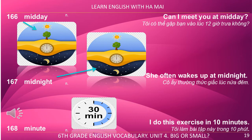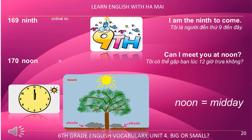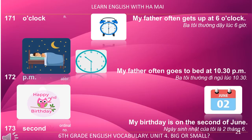I do this exercise in 10 minutes. Ninth. I am the ninth to come. Noon. Can I meet you at noon? O'clock. My father often gets up at 6 o'clock. PM. My father often goes to bed at 10:30 pm.